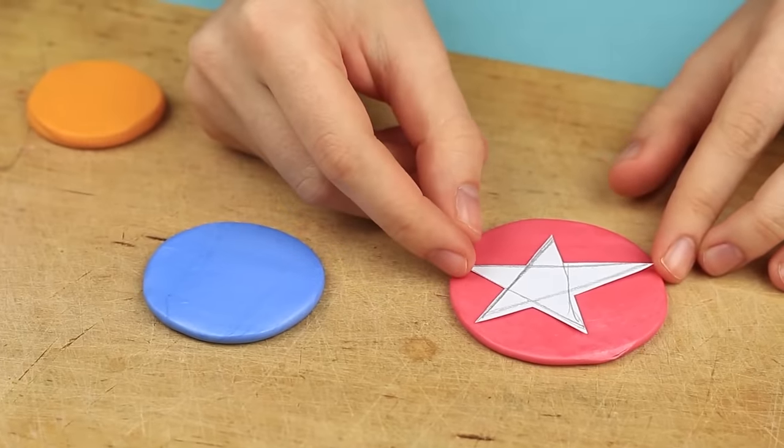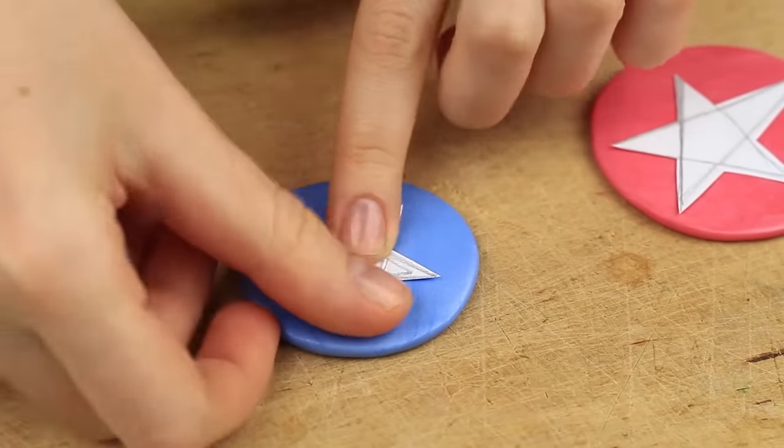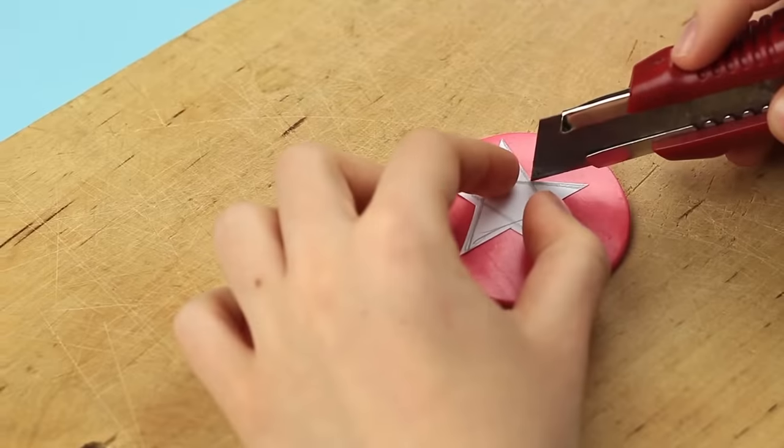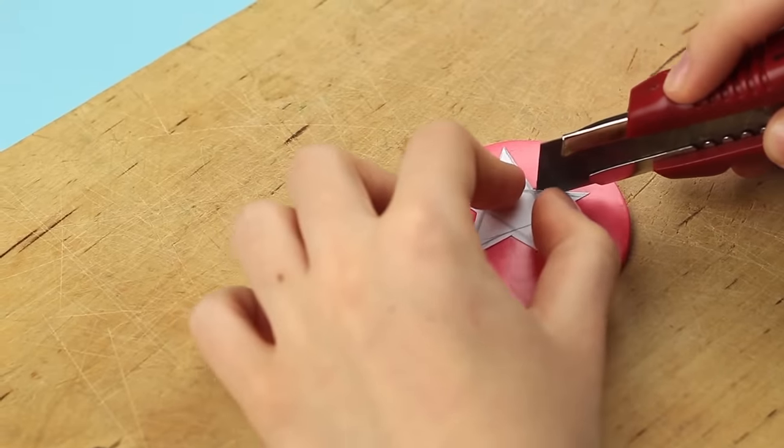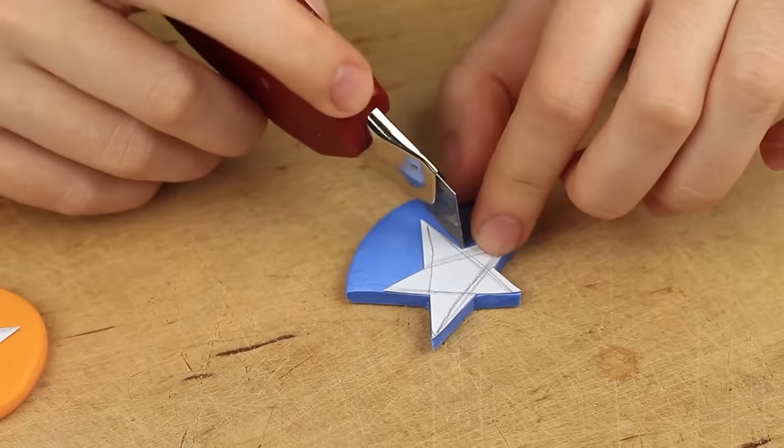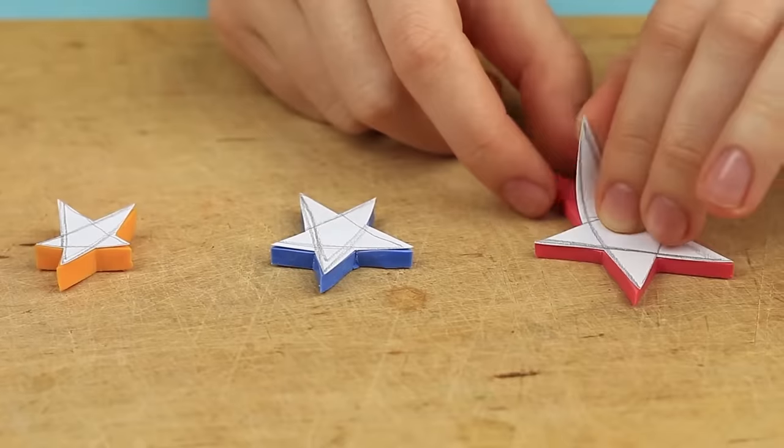Put the templates onto the clay circles. Press over and smooth with your fingers. As we'll use a craft knife, be careful to lay a wooden board. Cut out carefully. Don't let the templates shift. Remove the paper.